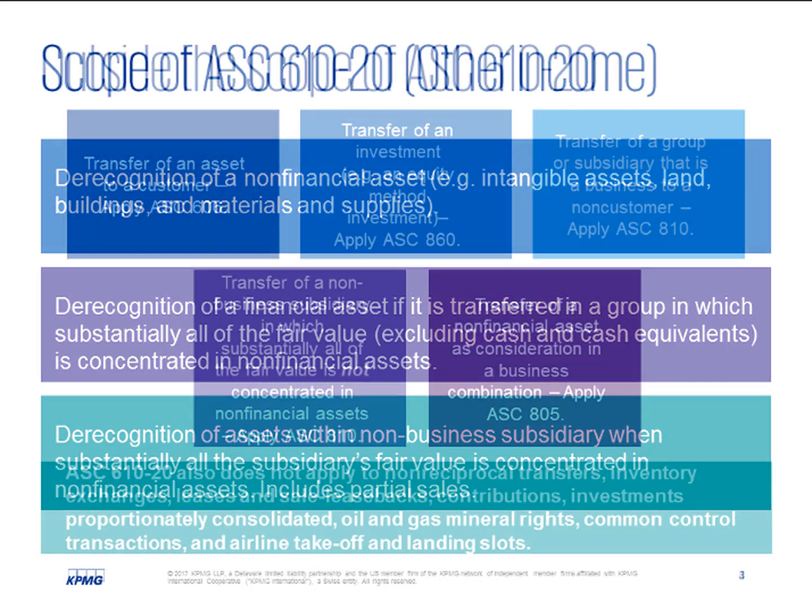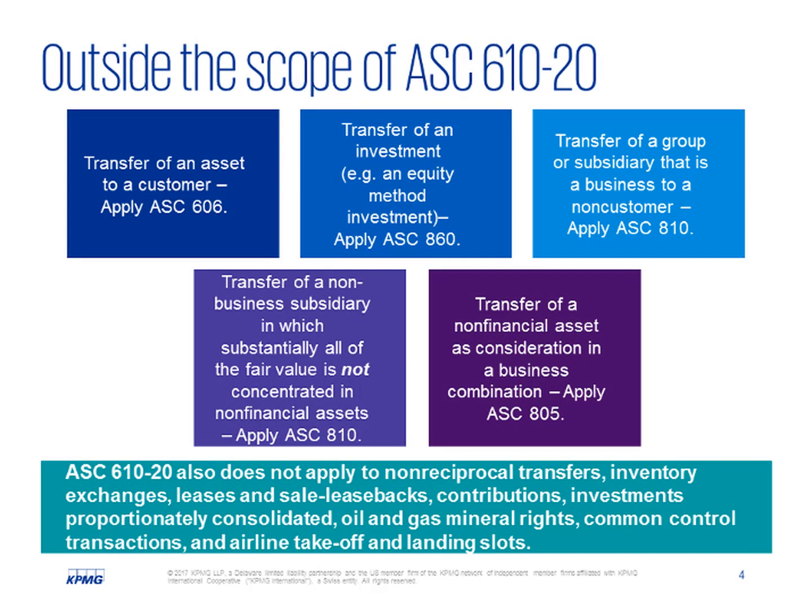Now that we know what is in scope, Sam, can you tell us what is not in scope? Of course. This is where it gets a bit complicated. If an entity transfers assets to a customer, it accounts for the transaction under ASC 606. If the transferred asset is an investment such as an equity method investment, an entity accounts for the transaction under the guidance on transfers of financial assets under ASC 860. If the group or subsidiary is a business and is sold to a non-customer, an entity accounts for the transaction under the derecognition guidance in ASC 810. If substantially all of the fair value of a transferred subsidiary that is not a business is not concentrated in non-financial assets, an entity accounts for the transaction under the derecognition guidance in ASC 810. If a non-financial asset is transferred as consideration in a business combination, an entity accounts for the transfer under ASC 805.